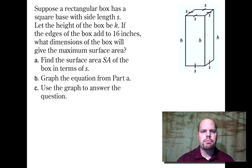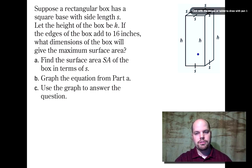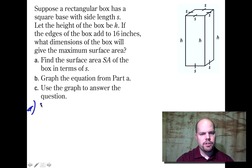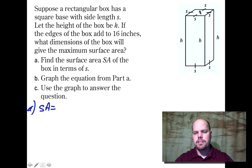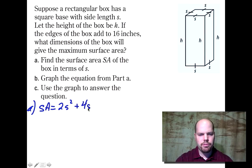Suppose a rectangular box has a square base of side length S and height H, and the edges of the box add to 16 inches. What dimensions give the maximum surface area? For part A, find the surface area in terms of S. The surface area has a bottom and top face — both S squared, so two S squared — plus four side faces each S by H, giving plus four SH.